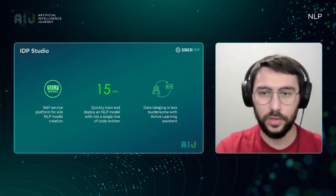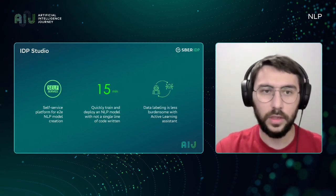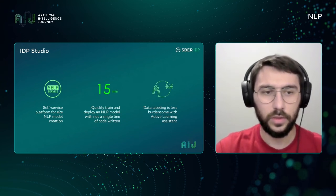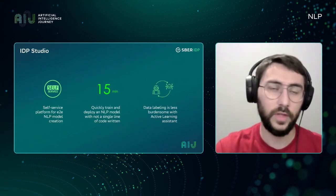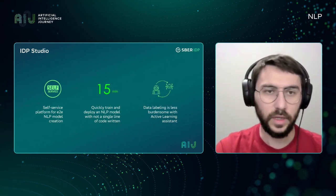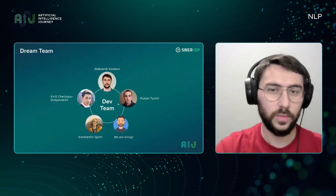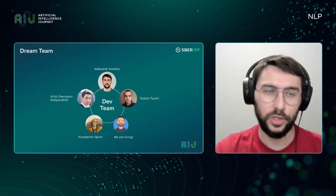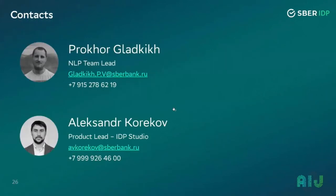ADG Studio aims to speed up time to market for NLP tasks for data scientists. We also have an important feature: an active learning assistant that speeds up the markup process. Active learning prioritizes elements for annotators so that data which impacts the model the most gets marked up first, and less impactful data is marked up last. From our internal benchmarks this means a two-times speedup — two times less data needs to be marked up.